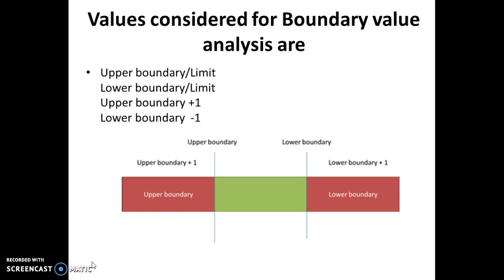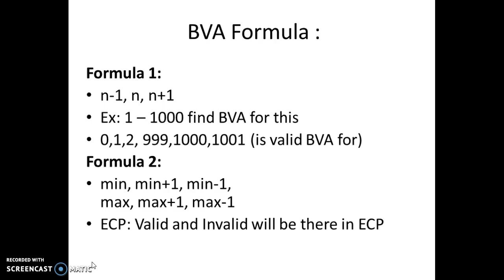The values considered for boundary value analysis are: upper boundary (upper limit), lower boundary (lower limit), upper boundary plus 1, and lower boundary minus 1. Values between the lower and upper bound are the valid values, whereas values beyond the upper and lower boundary are the invalid values.